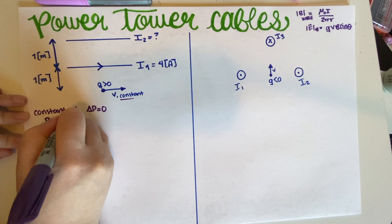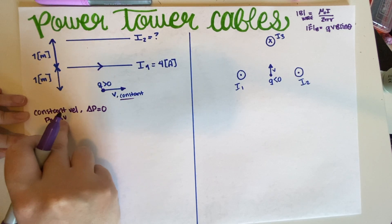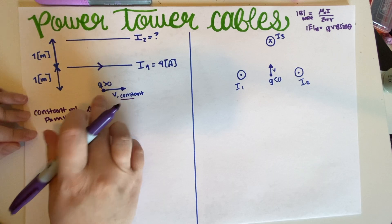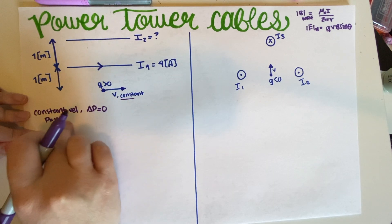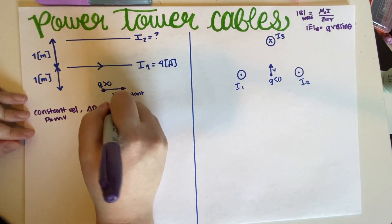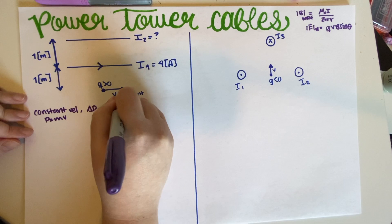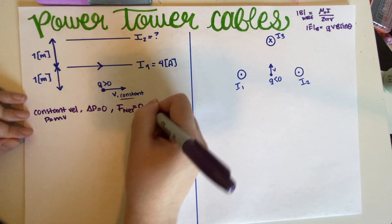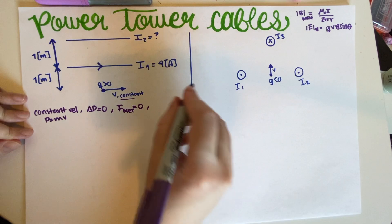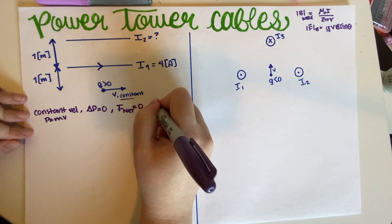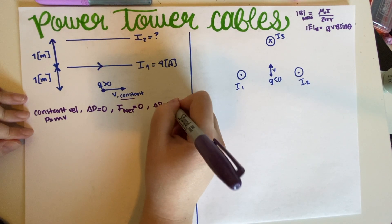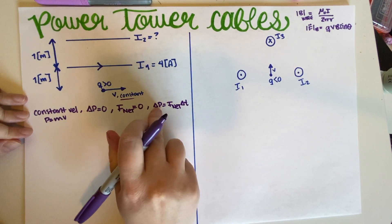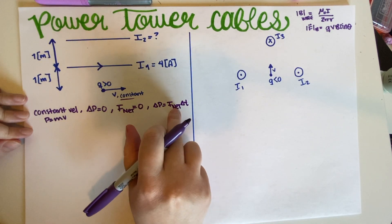Since p = mv, and the mass stays the same and the velocity stays the same, Δp = 0. This also means that the net force is equal to zero, because from 7B you might remember the equation Δp = F_net · Δt. Since Δt is never zero, we get F_net = 0.